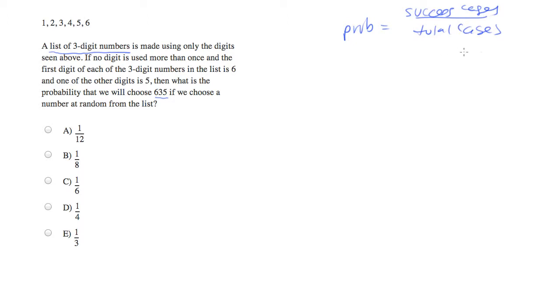And we've been told that we picked 635, which is just one specific scenario. So the real question is, how many total cases are there of numbers that we could pick?